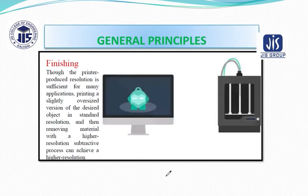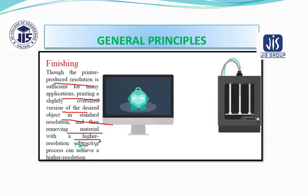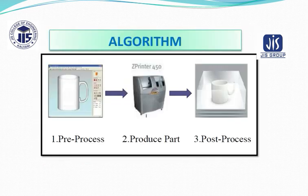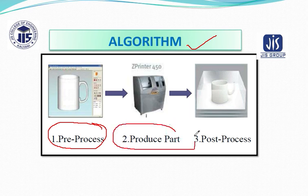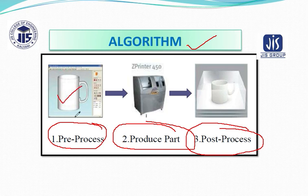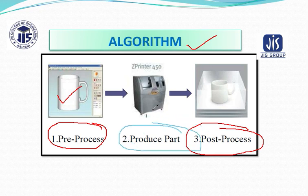Regarding the finishing process: though the printer-produced resolution is sufficient for many applications, printing a slightly oversized version of the desired object in standard resolution and then removing material with higher resolution — including subtractive processes — can yield higher resolution objects. The algorithm involves three stages: pre-process (developing the CAD model and converting it into an STL file), process (building the part with the 3D printer), and post-process (if higher finishing of the product is required).